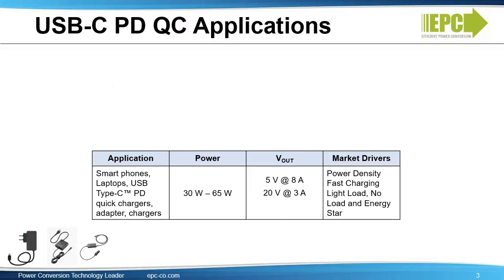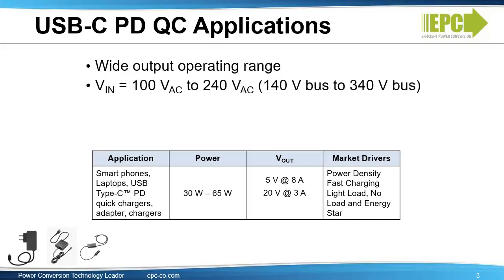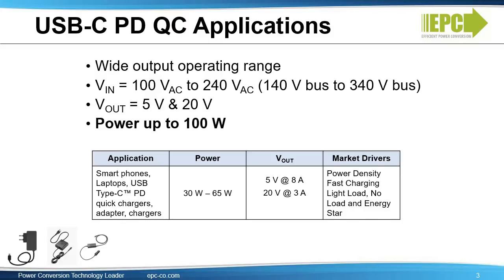We will focus on USB-C PD quick charger applications. These applications have a wide voltage operating range. The input voltage can be 100 to 240 volts AC, which results in a DC bus voltage from 140 to 340 volts. The output voltage can vary from 5 to 20 volts, and new applications allow up to 100 watts — that's 5 amperes at 20 volts. USB-C PD quick chargers and adapters for smartphones, laptops, and others require the highest power density for fast charging and small size.